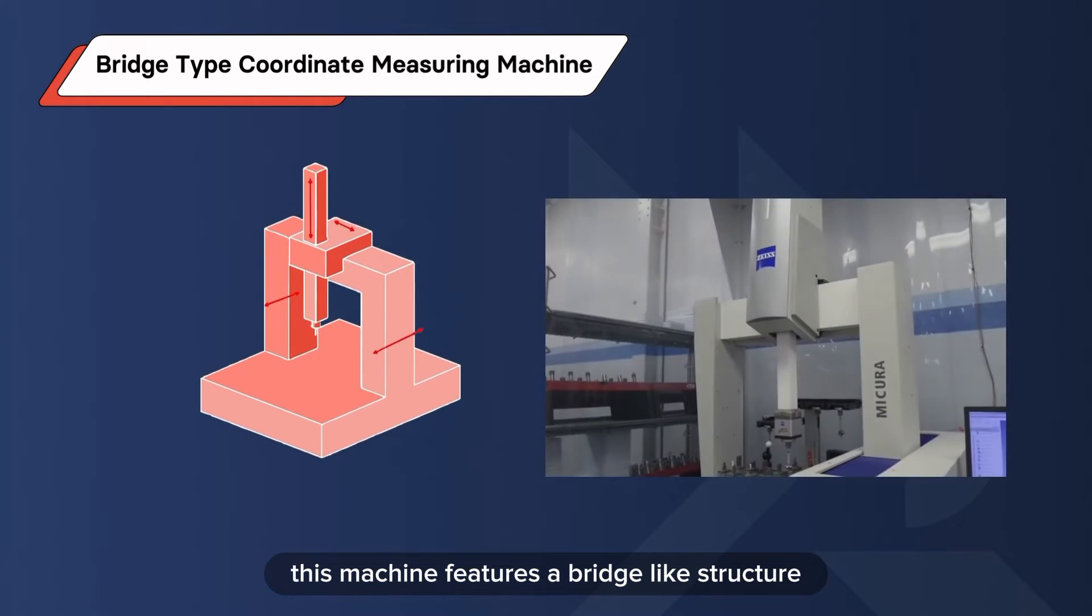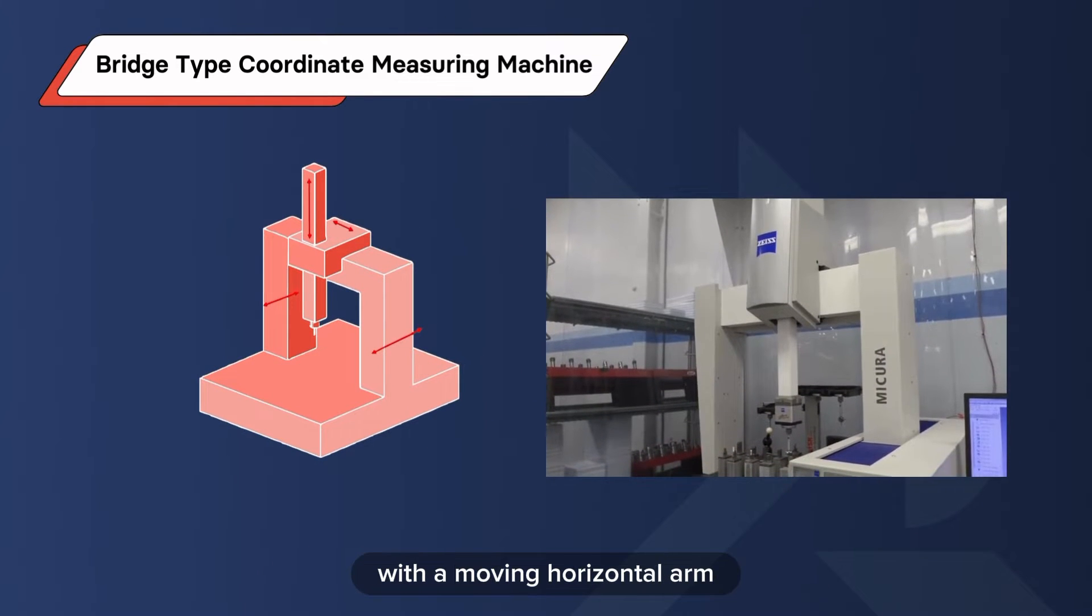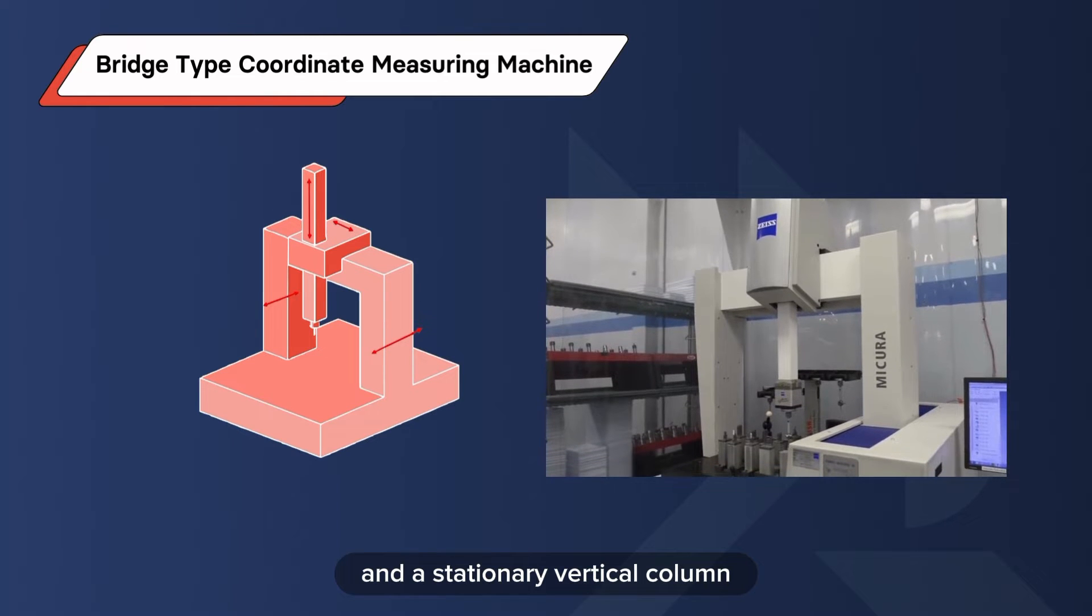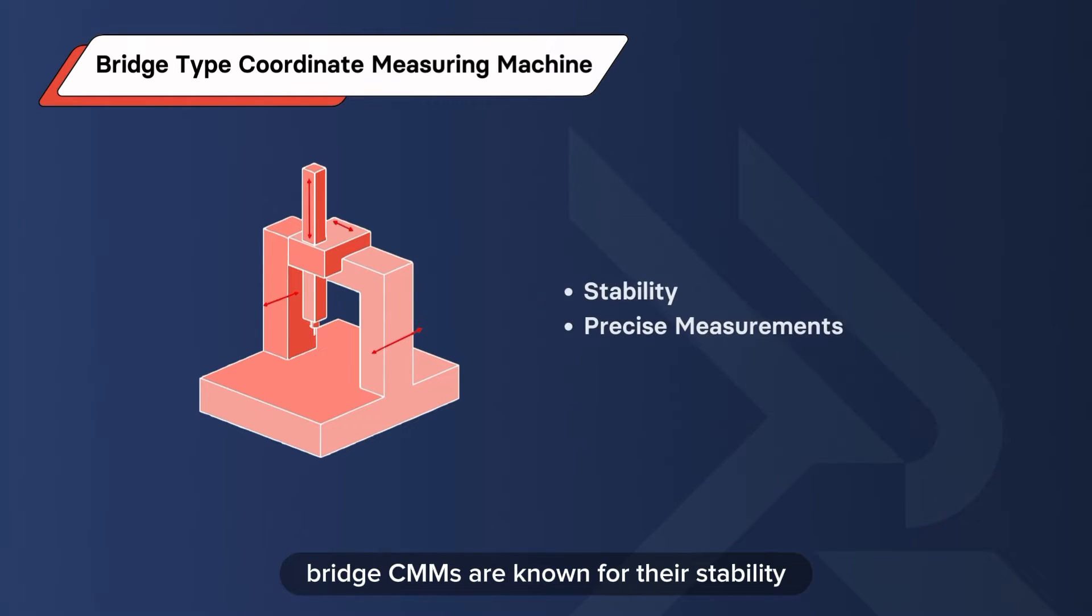This machine features a bridge-like structure with a moving horizontal arm and a stationary vertical column. Bridge CMMs are known for their stability and are ideal for precise measurements.